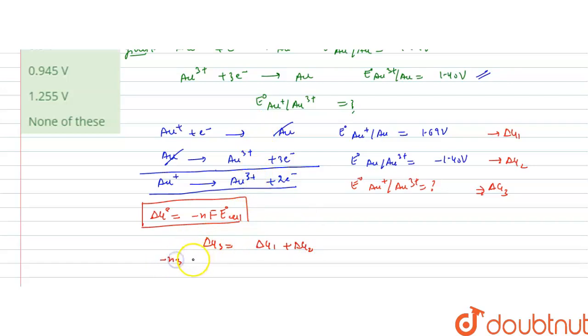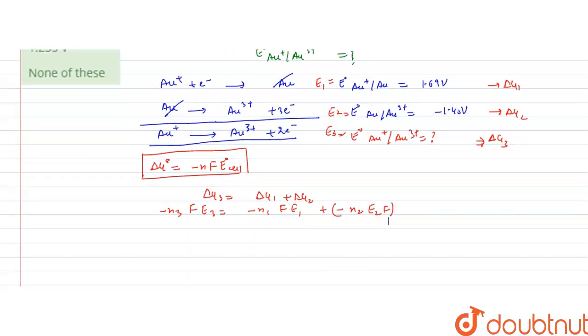Delta G3 will be minus N3 F E3. This is E1, this is E2, and this is E3. Delta G1 equals minus N1 F E1, and this equals minus N2 F E2. If we take F common it will be cancelled, so we will have N3 E3 equals N1 E1 plus N2 E2. We have to calculate the value of E3, so it will be N1 E1 plus N2 E2 divided by N3.